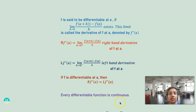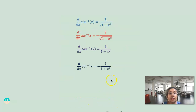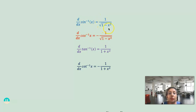Now, inverse trig functions. The derivative of sin inverse x is 1 divided by the square root of (1 minus x squared). The derivative of cos inverse x is minus 1 divided by the square root of (1 minus x squared). Both are similar — only for sin inverse x we have a plus, and for cos inverse x we have a minus.